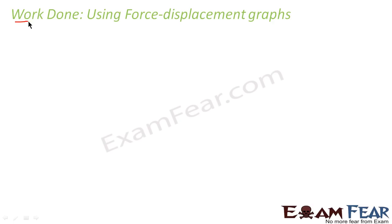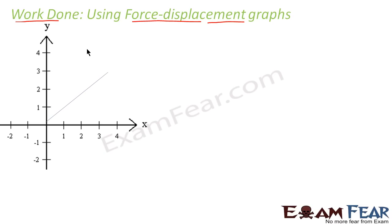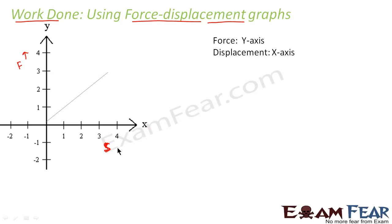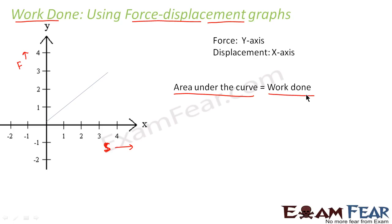Now let us study work done using force-displacement graphs — that is, how is work done found graphically. If we plot a graph taking force along the y-axis and displacement (denoted by S) along the x-axis, then the area under the curve gives the work done.